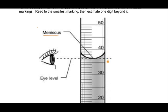What you do — there are a couple things. One, you always want to read the volume from the bottom part of the meniscus. You're positioning your eye level there. Notice what the graduated cylinder is telling us — the max volume for this particular graduated cylinder is about 50 milliliters.